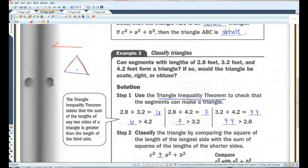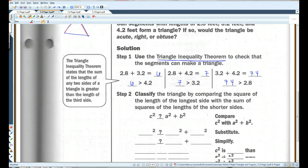That's a triangle inequality theorem. So, what we're doing here is we're adding each pair of sides and making sure that the sum of those two sides is bigger than the third side. In this case, we have a triangle. So, let's classify the triangle.